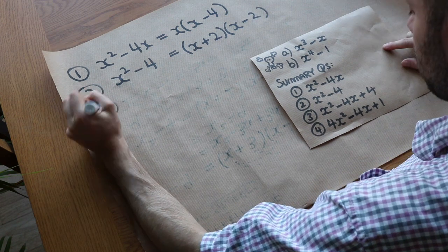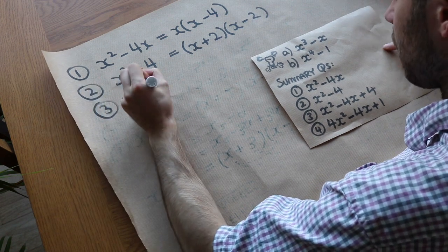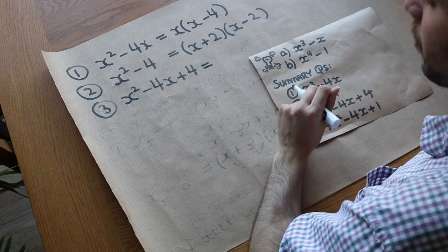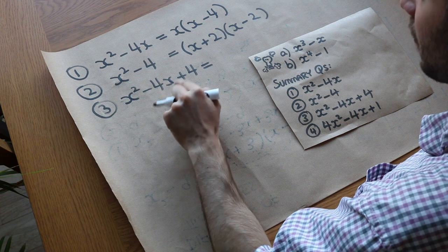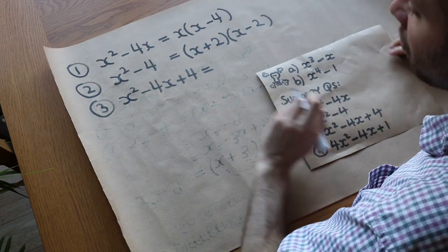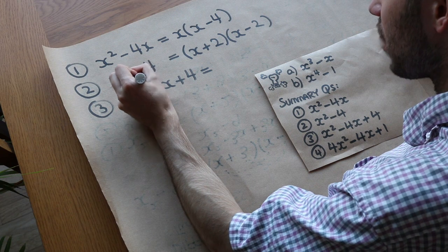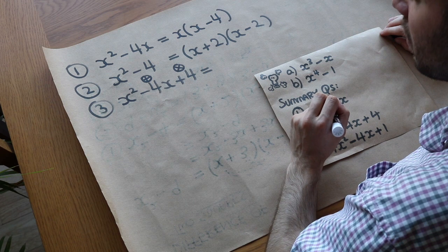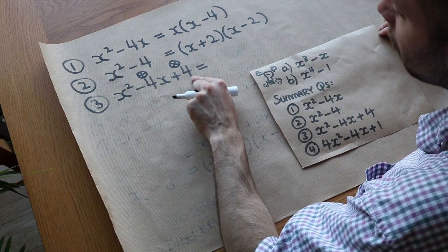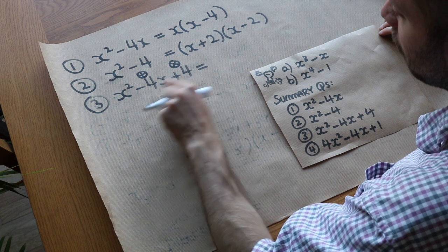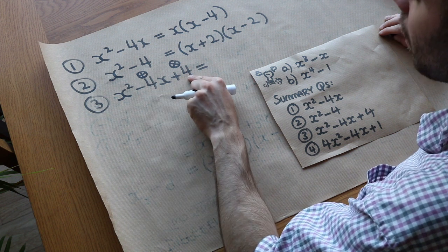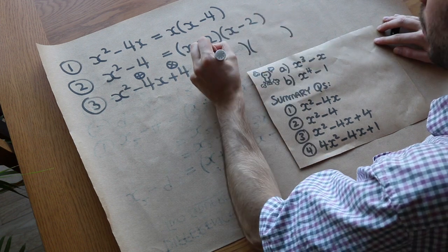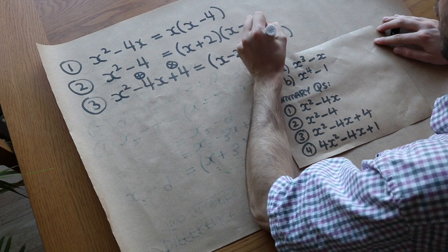Third: x squared minus 4x plus 4. This is in the form x squared plus something x plus something. We need two numbers that multiply to give 4 and add to give minus 4 — both must be negative. Those numbers are minus 2 and minus 2. So the factorisation is (x − 2)(x − 2).